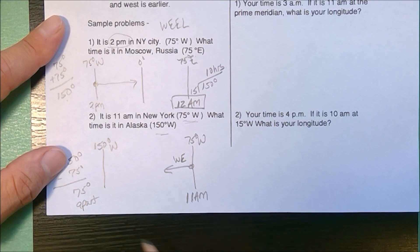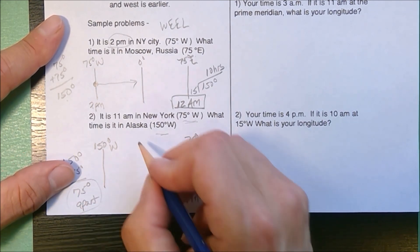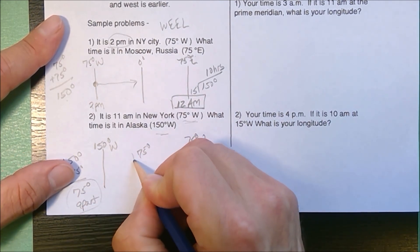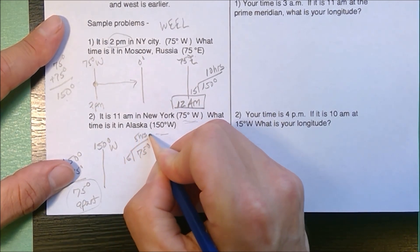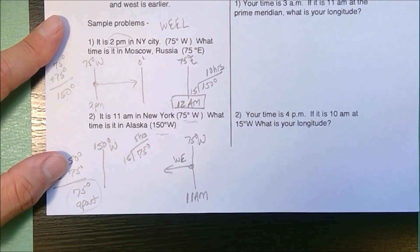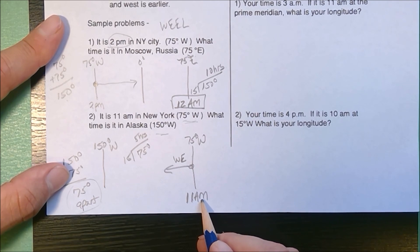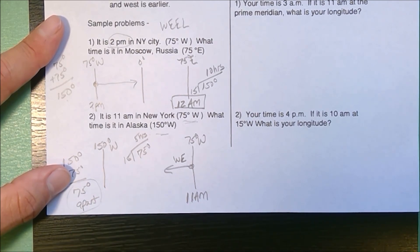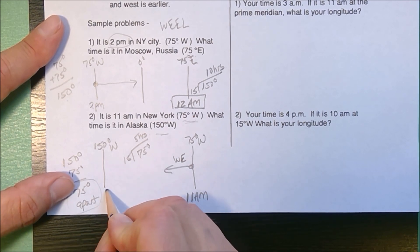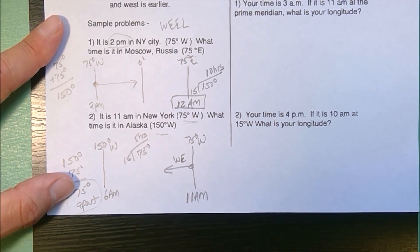Once I know the number of degrees, I'm going to do 75 divided by 15, and that gives me five hours. So I have to go five hours prior to 11 a.m. If you need to count back on a clock, this would be 6 a.m.